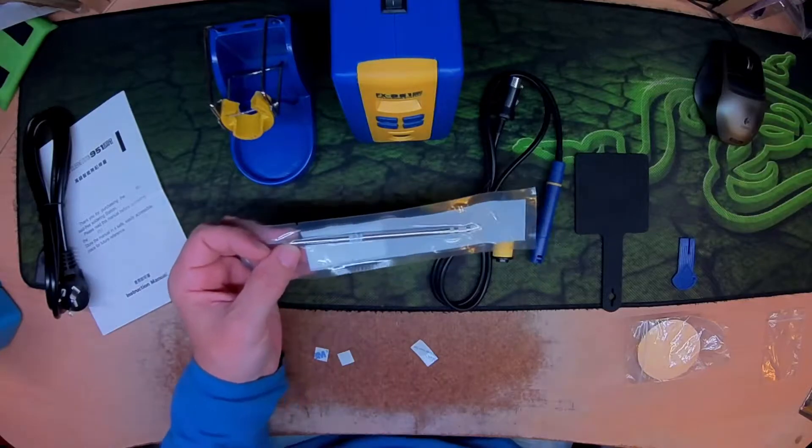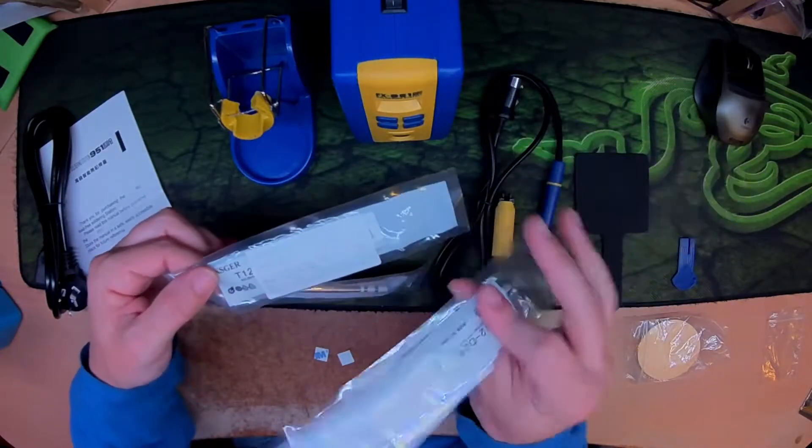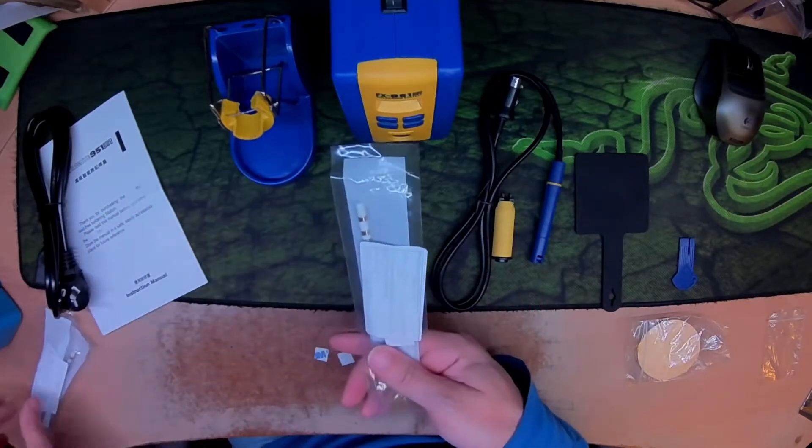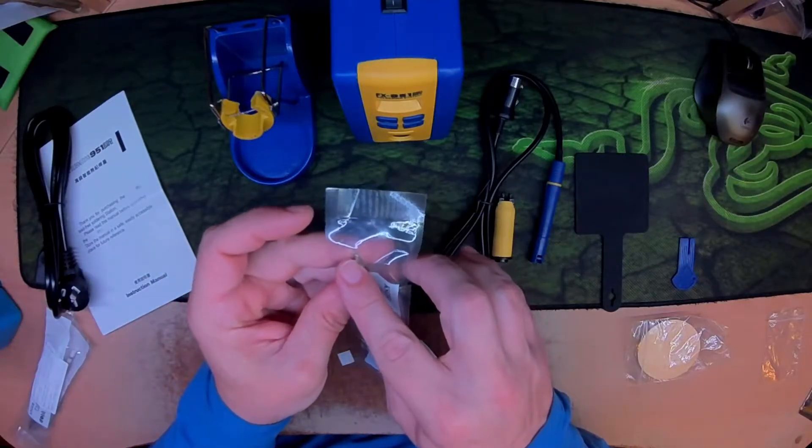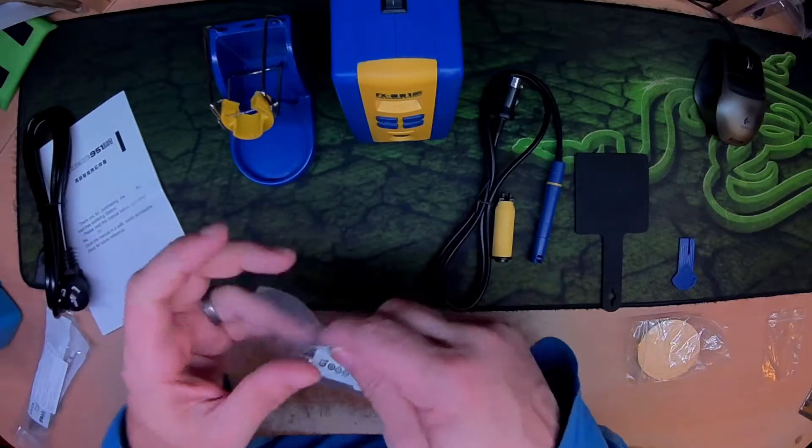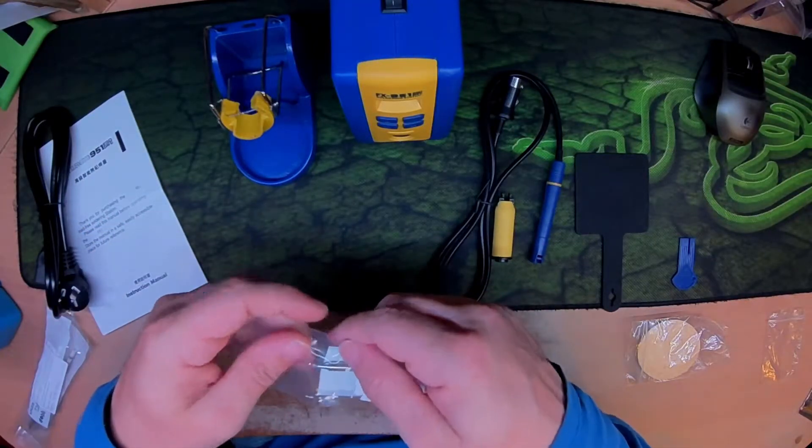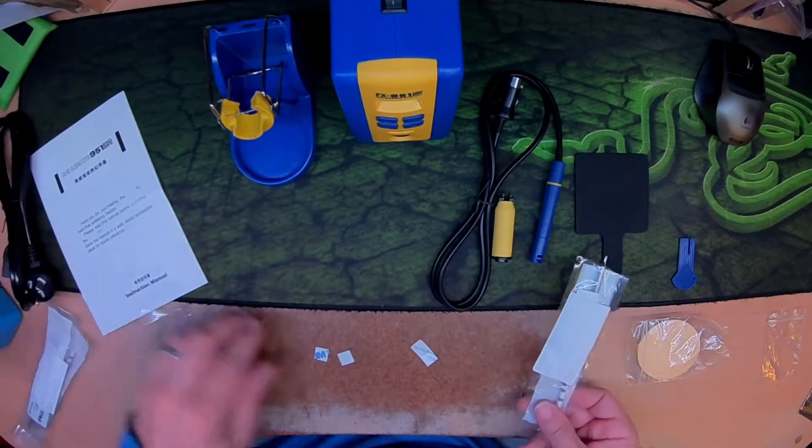I already purchased some spare tips. These are T12D24s. I'm not going to use a K-type tip. For what I need, I'm going to need chisel bits like this. Let's see how this goes together.